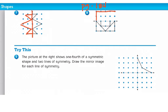Number eight. Draw each part of the shape first. Now if you look at the try this at the bottom of your page, it says the picture at the right shows one-fourth of a symmetric shape and two lines of symmetry. Draw the mirror image for each line of symmetry. So I'm going to start with this one here. And I'm just going to now, let me remove that first. I'm going to go ahead and draw that.